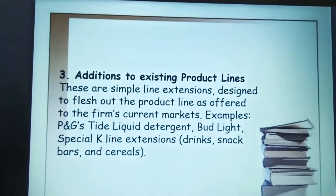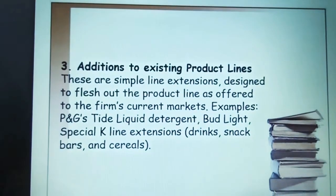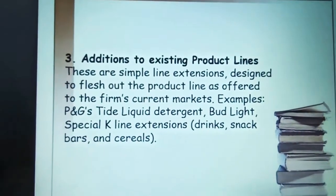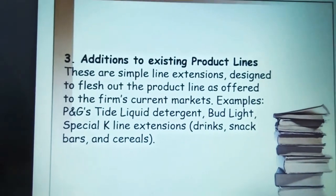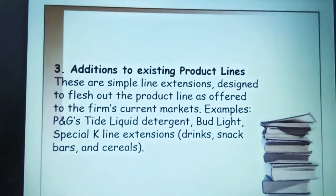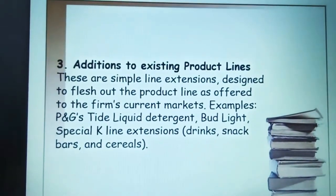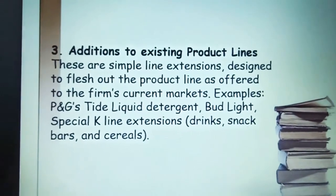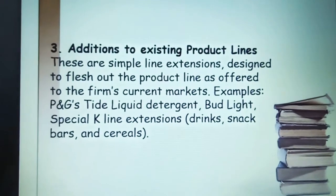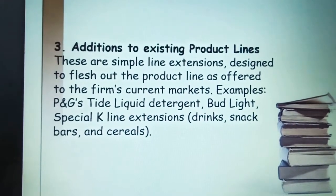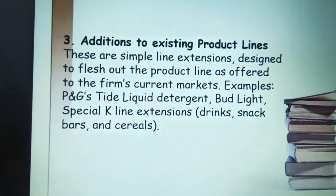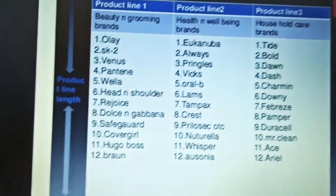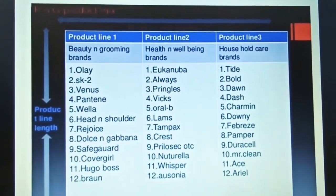Addition to existing product lines: if you find that the demand of a particular product is not going to be high in the future, you need to do some improvements, do something innovative in the existing product, and convert it into a new product. Examples include P&G Tide liquid detergent, light detergent, and special line extensions.